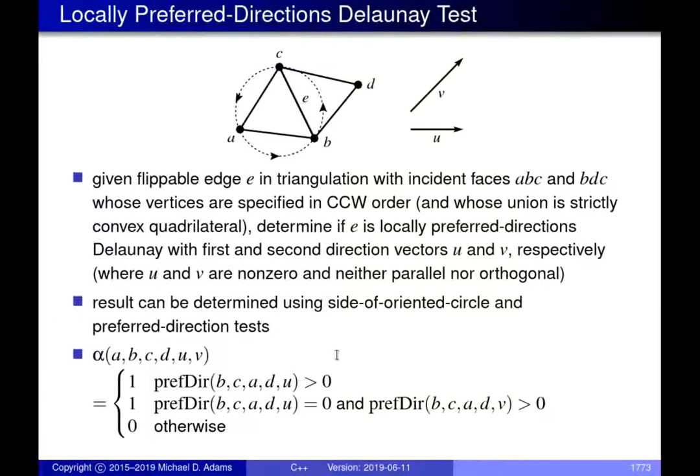In the last lecture, we left off talking about a variety of geometric predicates, and we're going to continue along on this theme today. To begin with, I'm going to talk about the locally preferred directions Delaunay test. This is another predicate, and its application is in computing preferred directions Delaunay triangulations.